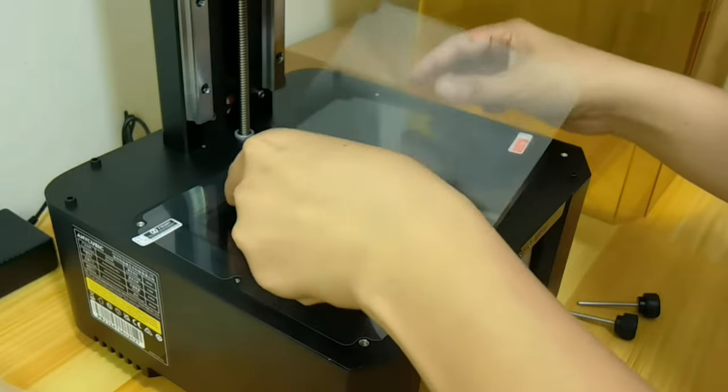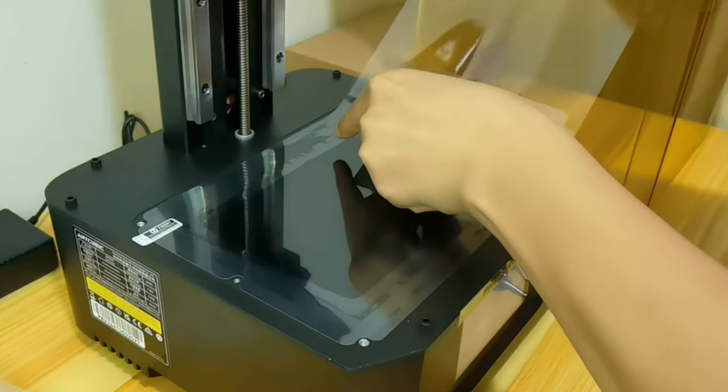Then take your squeegee or credit card, swipe and pull the under layer the rest of the way.